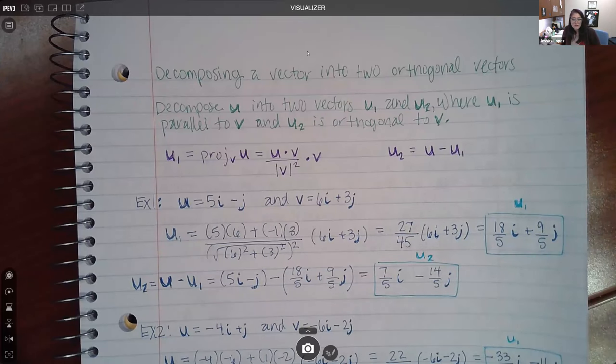In this video, we are decomposing a vector into two orthogonal vectors or two perpendicular vectors. The directions say decompose U into two vectors, U1 and U2, where U1 is parallel to V and U2 is orthogonal to V.